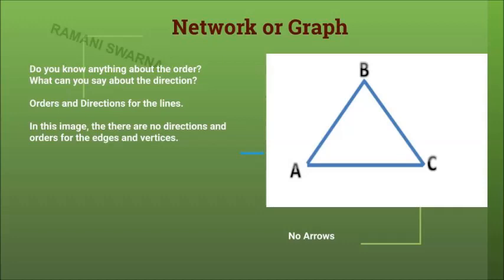Now do you know anything about the order of these lines? That's the question you need to ask yourself. What can you say about the direction about these lines which are present? Now direction specifically has to be for the lines, not for the points. So you are going to have to remember orders and directions for the lines. Now we will have to look very carefully and see, are there any orders for these particular points? Are there any directions given for these lines?